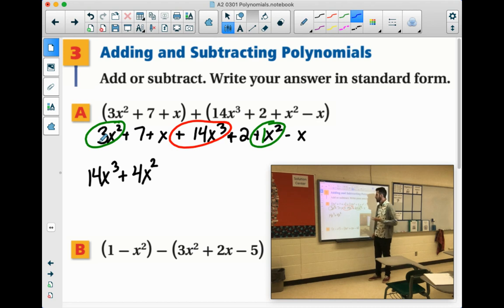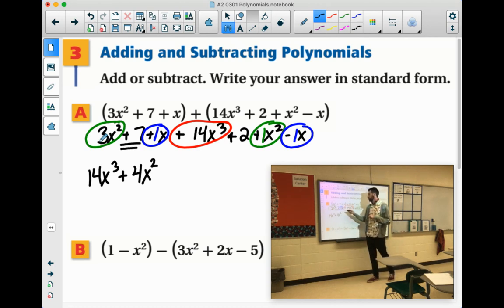Then we look for our x to the first power. We have 1x minus 1x. Those just cancel each other out. So you could write plus 0x, but that's unnecessary. So then we just go to the next part. We have 7, positive 7, plus 2, which is 9.